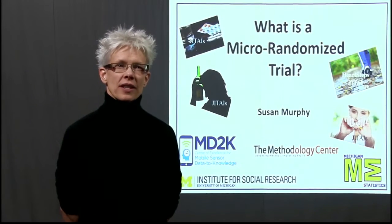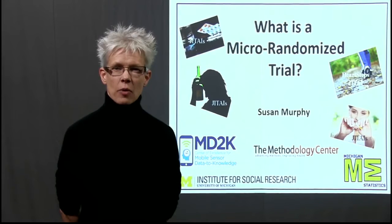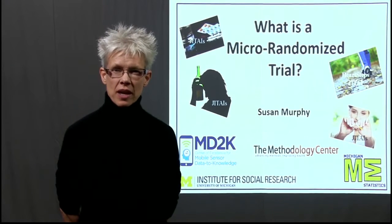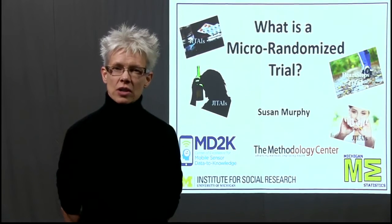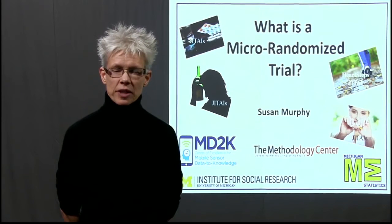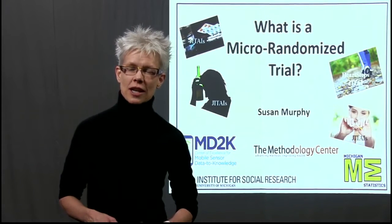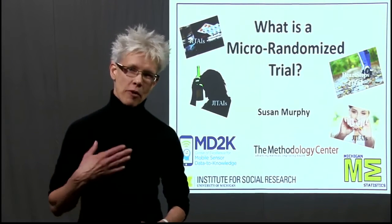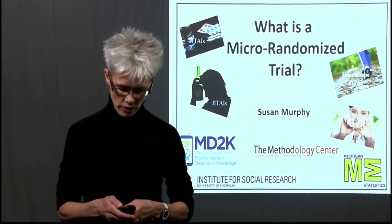This is the second video in a series of three videos. All of the videos concern how we might develop just-in-time adaptive interventions. In particular, this video covers a type of experimental trial that you could use to develop an adaptive intervention. We're going to go through that experimental trial design in the context of a smoking cessation study in which both myself and other members of my group are involved.